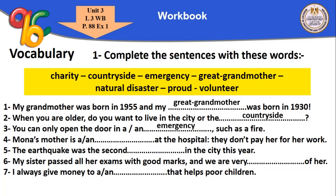Mona's mother is a volunteer at the hospital — they don't pay her for her work. Number five: the earthquake was the second natural disaster in the city this year — along with volcanoes, hurricanes, and tornadoes, it is a kind of natural disaster.